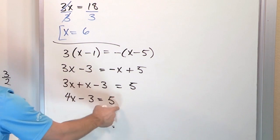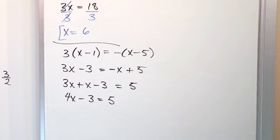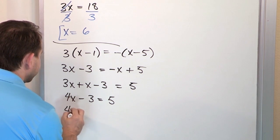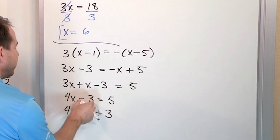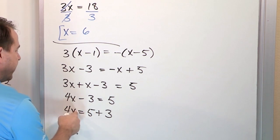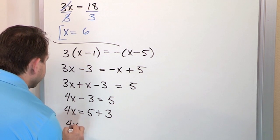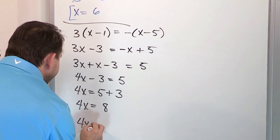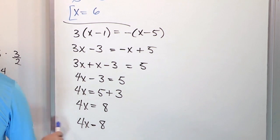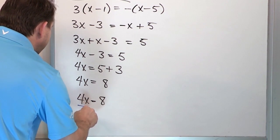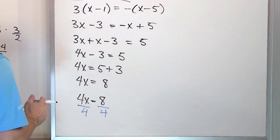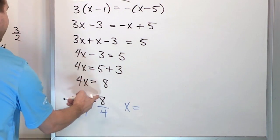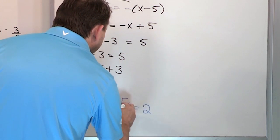This is back to the familiar type. Add 3 to both sides: 4x equals 8. Then divide both sides by 4 — since 4 divided by 4 is 1, all we have on the left is x, and 8 divided by 4 is positive 2. So the answer is x equals 2.